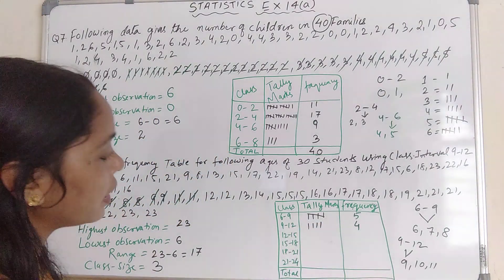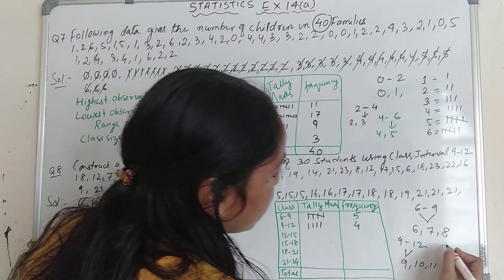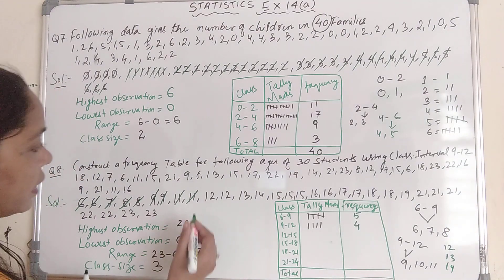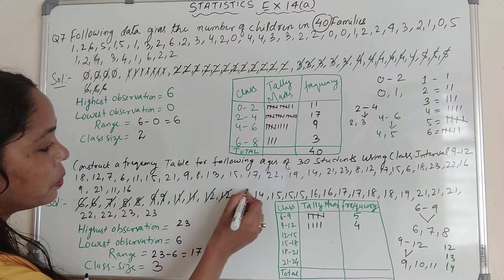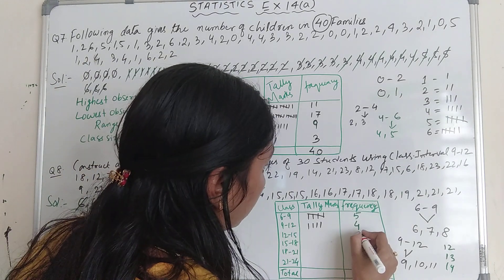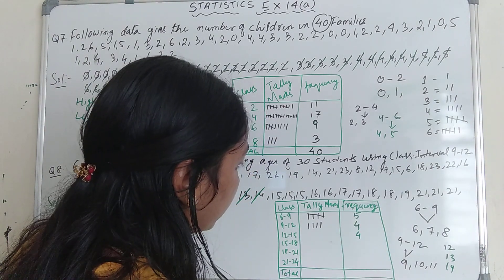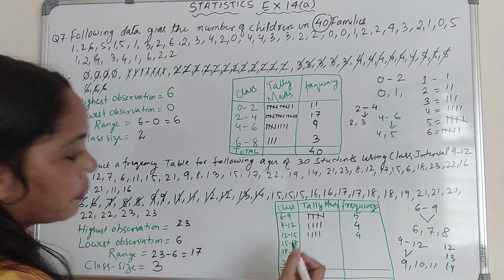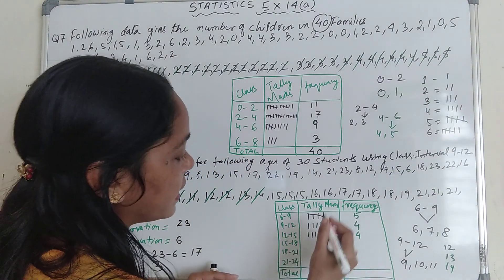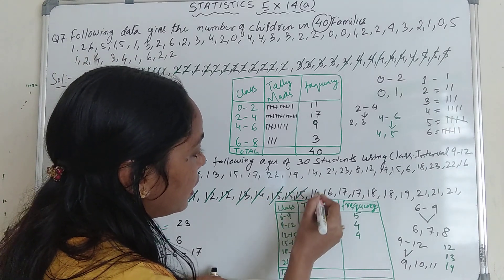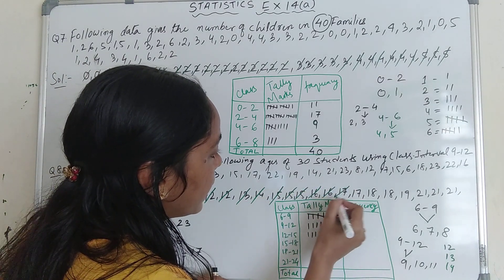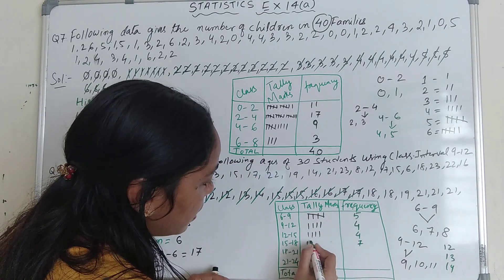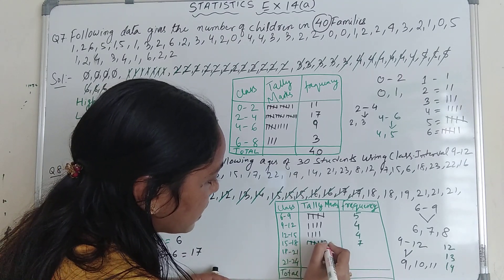Next, interval 12 to 15 — include 12, 13, and 14. Counting gives 1, 2, 3, 4 — so the frequency is 4. Write tally marks for 4. For interval 15 to 18 — include 15, 16, and 17. Counting gives 1, 2, 3, 4, 5, 6, 7 — so the frequency is 7. Write tally marks for 7.